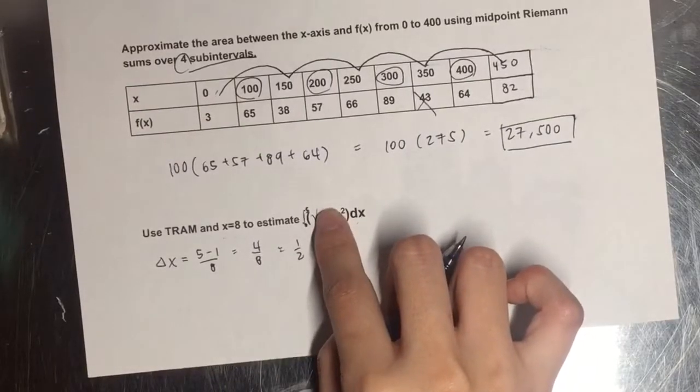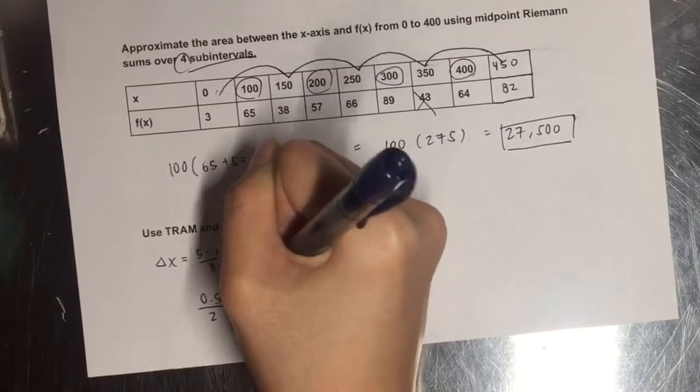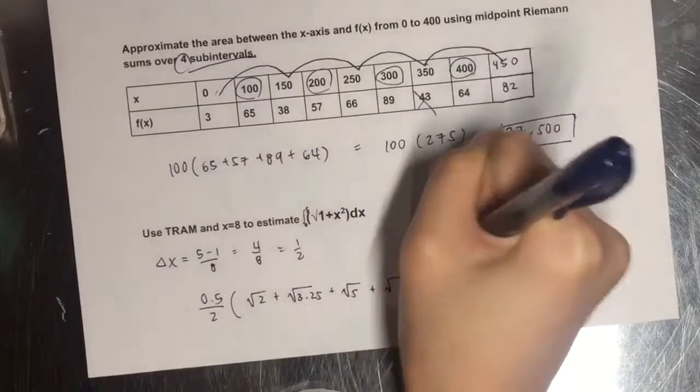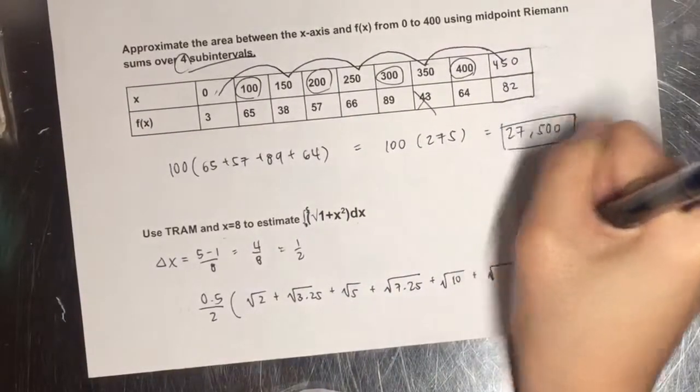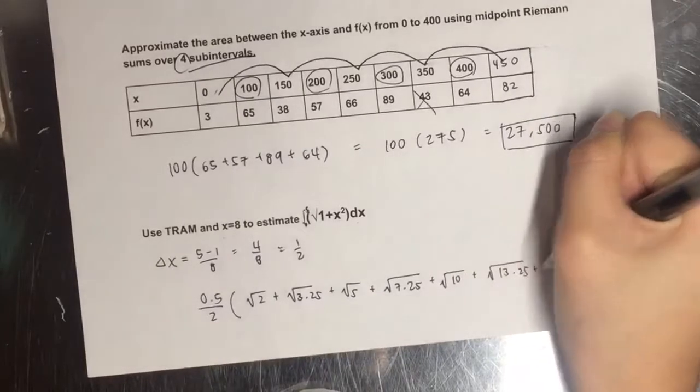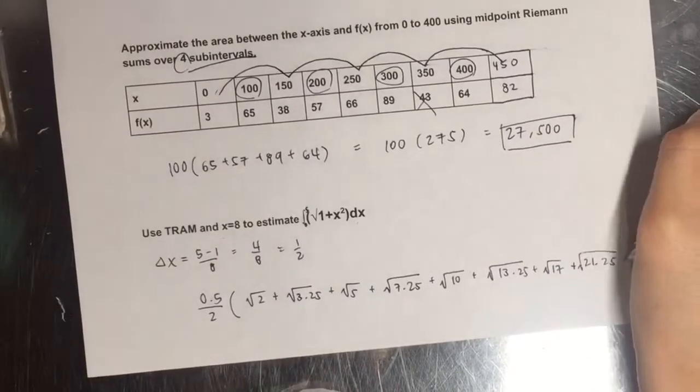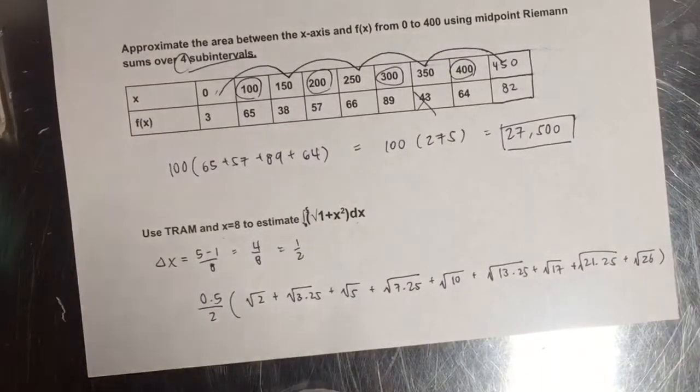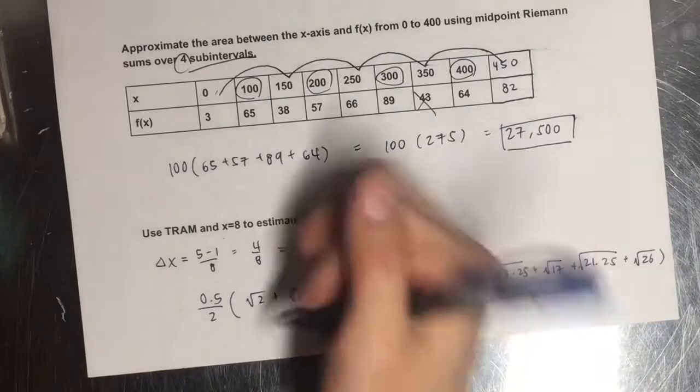We plug that into the TRAM formula because that's how we're going to find our subintervals. So we've got 0.5 over 2, and then we plug in each value into the equation to calculate that. I've listed out all the values up until 5, and then I just plug that into my calculator. You can leave this as is on the AP test, but I just wanted to make it look nicer. So I just calculated it, and I got this answer.